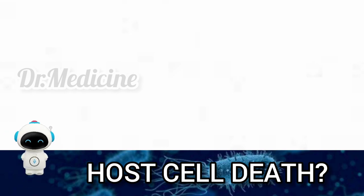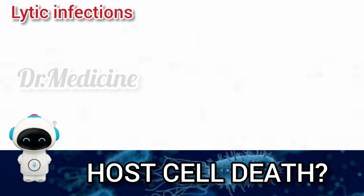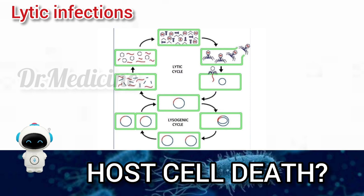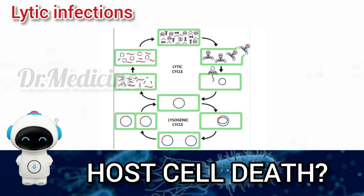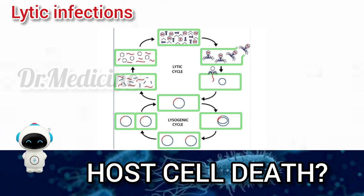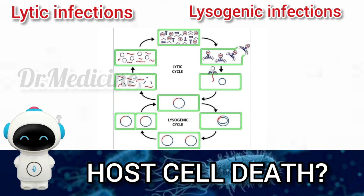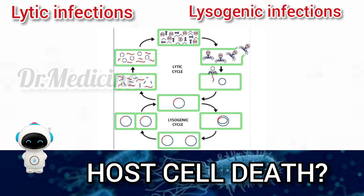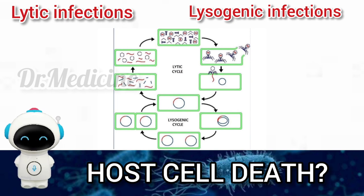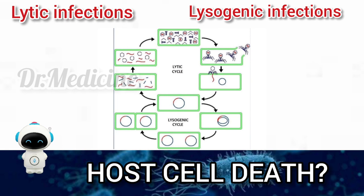The death of the host cell may occur immediately or may be delayed. Immediate death is caused by lytic infection, where the virus enters the cell, immediately replicates, and causes the host cell to burst, releasing new viruses that infect other cells. Delayed death is caused by lysogenic infection, where the genetic material enters the host cell and replicates with host chromosomes, eventually switching to lytic infection. In bacteriophages, the phage DNA is inserted into the host cell DNA, and only a few copies are made before determining whether the infection becomes lytic.